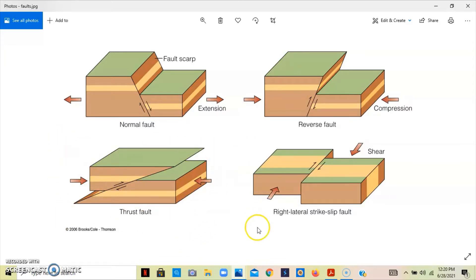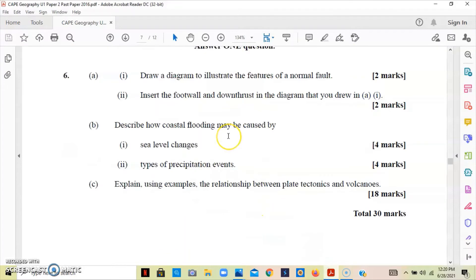Part b asks us to describe how coastal flooding may be caused by sea level changes and the type of precipitation events. When there is a change in the sea level, it makes it difficult for water in the river to flow into the ocean because the sea is too high. Thus, water will be forced over onto the flood plains.